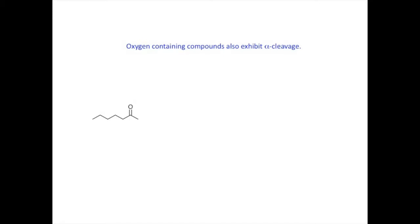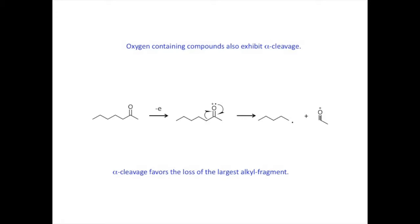Let's look at an oxygen-containing molecule. A ketone will ionize, losing an electron from a non-bonding pair associated with the oxygen. The product radical tries to form a new bond between the oxygen and the adjacent carbon. That carbon must break a bond in order to form a new bond with the oxygen. As a result, an old bond breaks, the odd electron ends up on the neutral fragment, and the charge remains on the oxygen atom. Once again, the alpha cleavage favors the loss of the largest alkyl fragment.